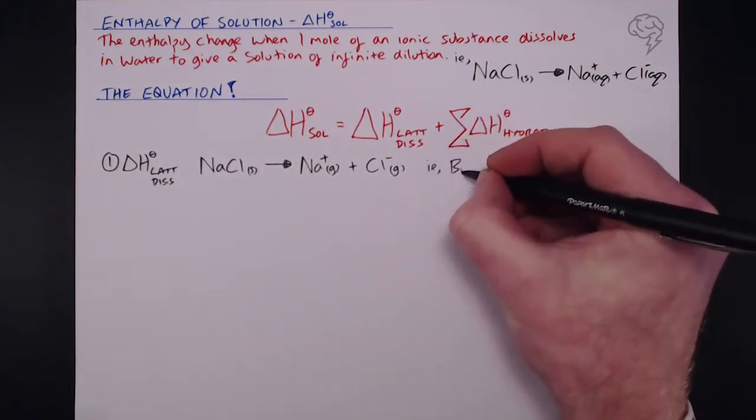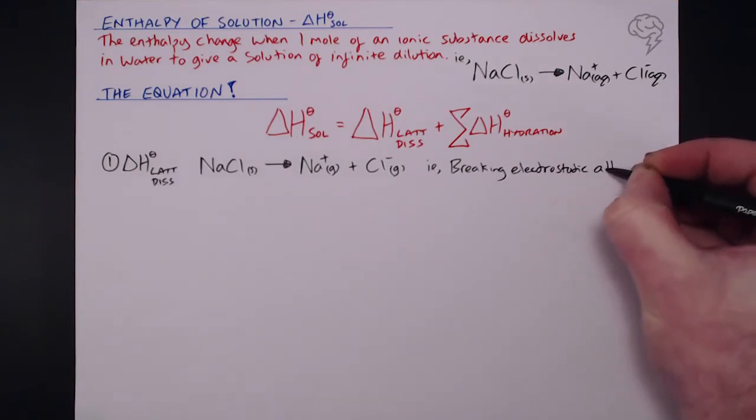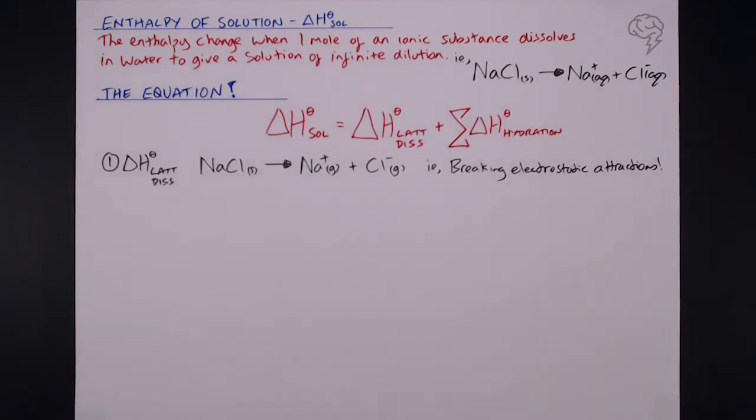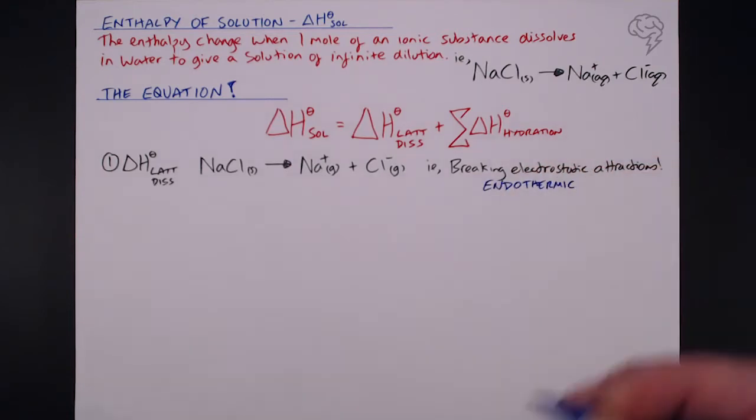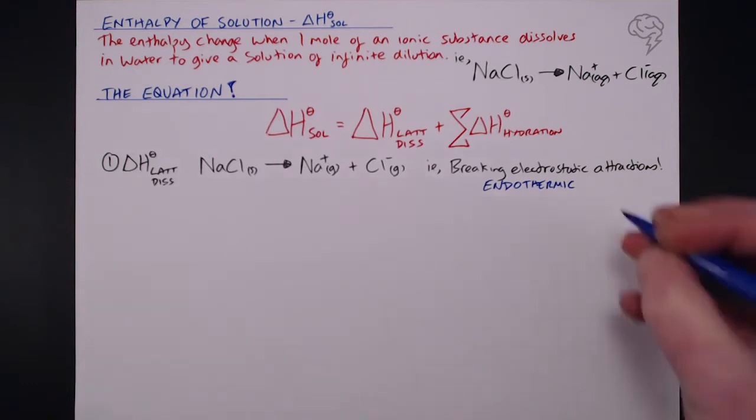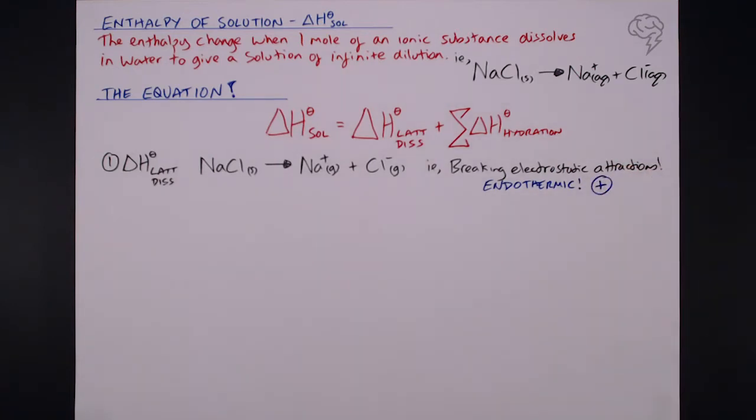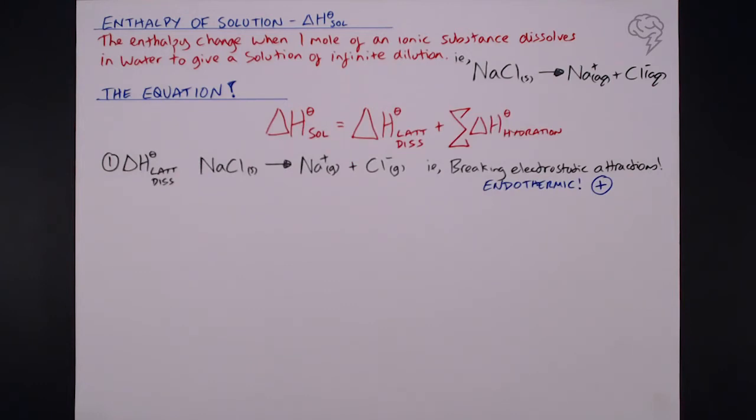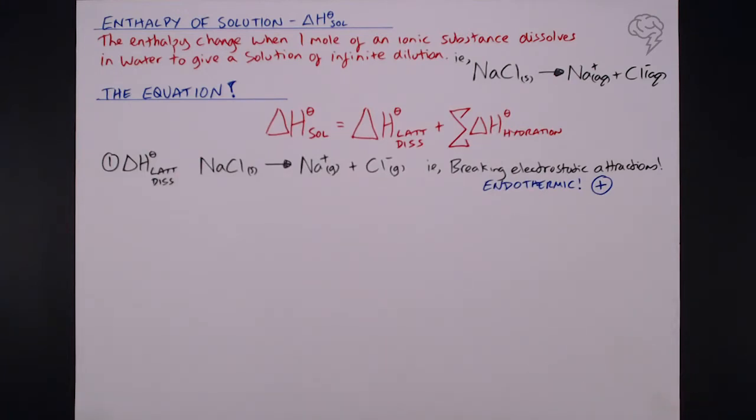In other words, we are breaking electrostatic attractions. So this is an endothermic process. Now every single time, every day of the week, this is going to be a positive delta H. We need to put energy in to actually do that. So that's a brief reminder of what lattice dissociation is. But once those ions have dissociated into gaseous ions, we then need to hydrate them. They need to actually dissolve in water.